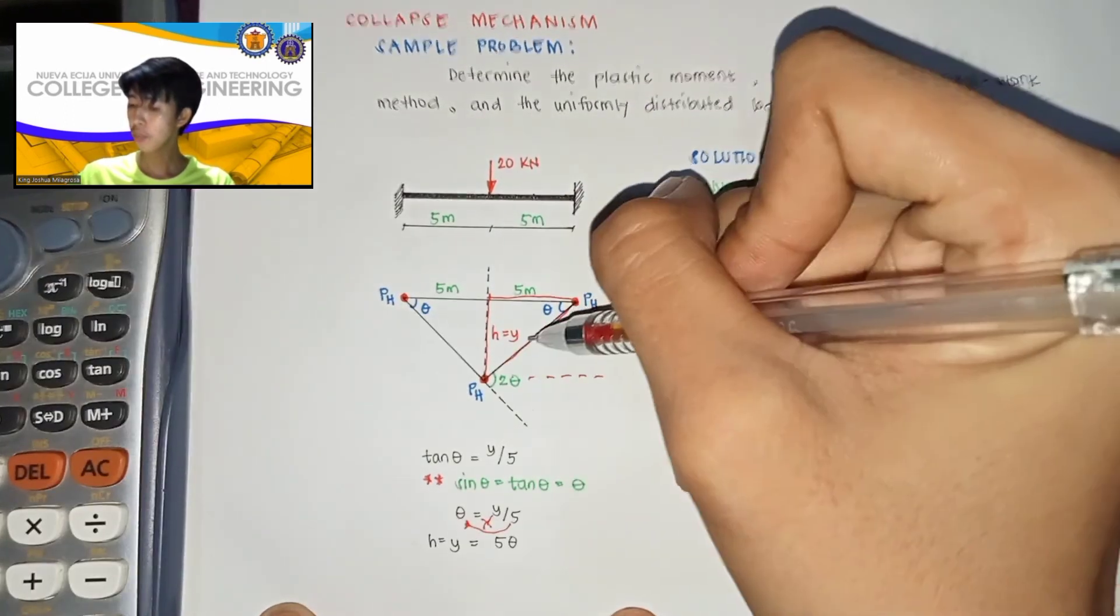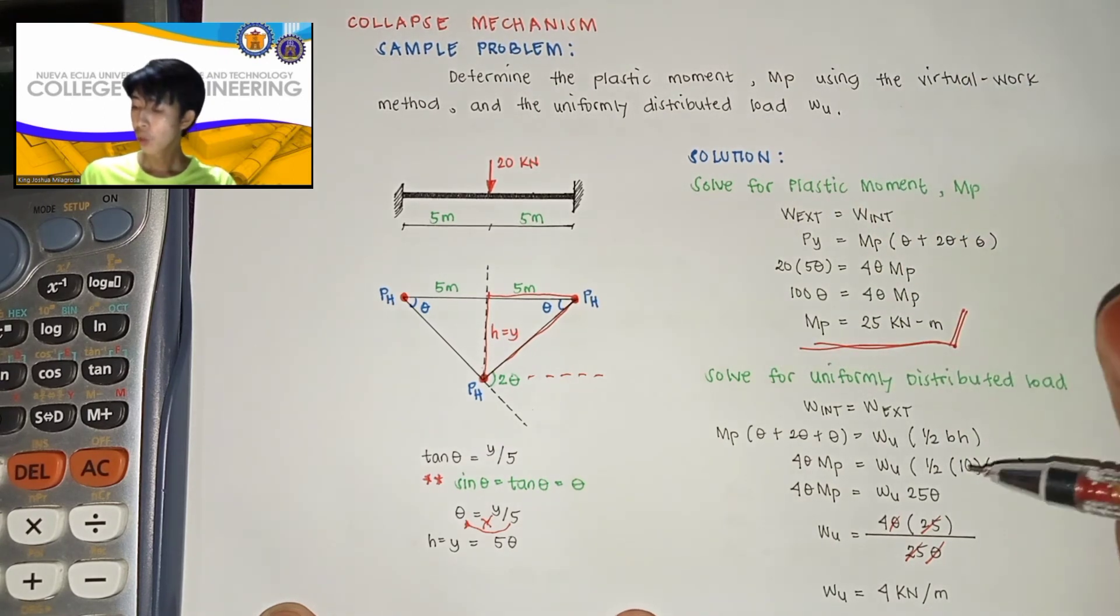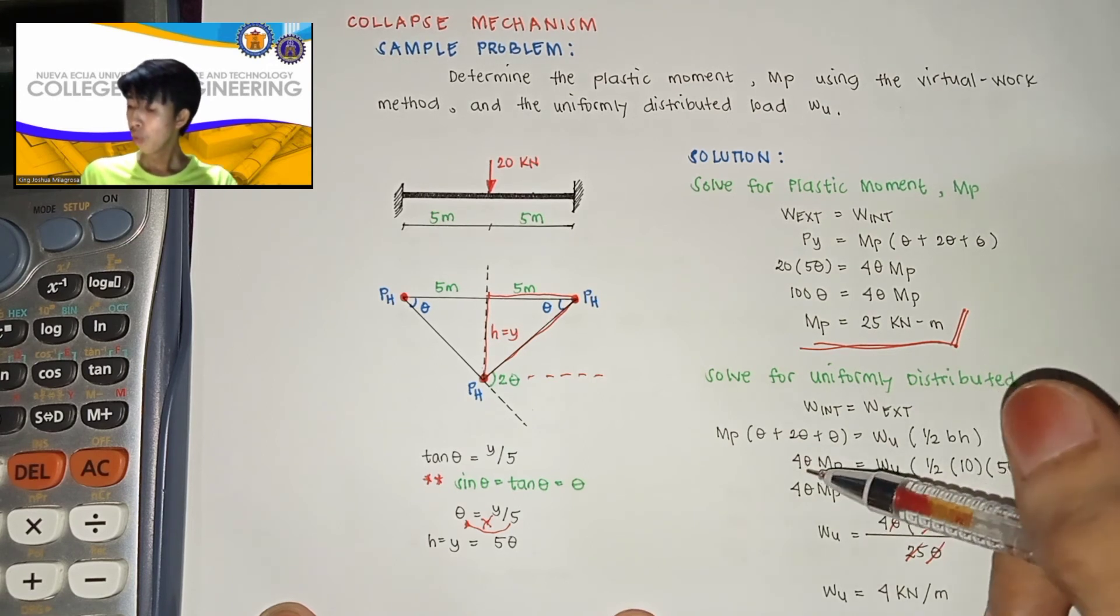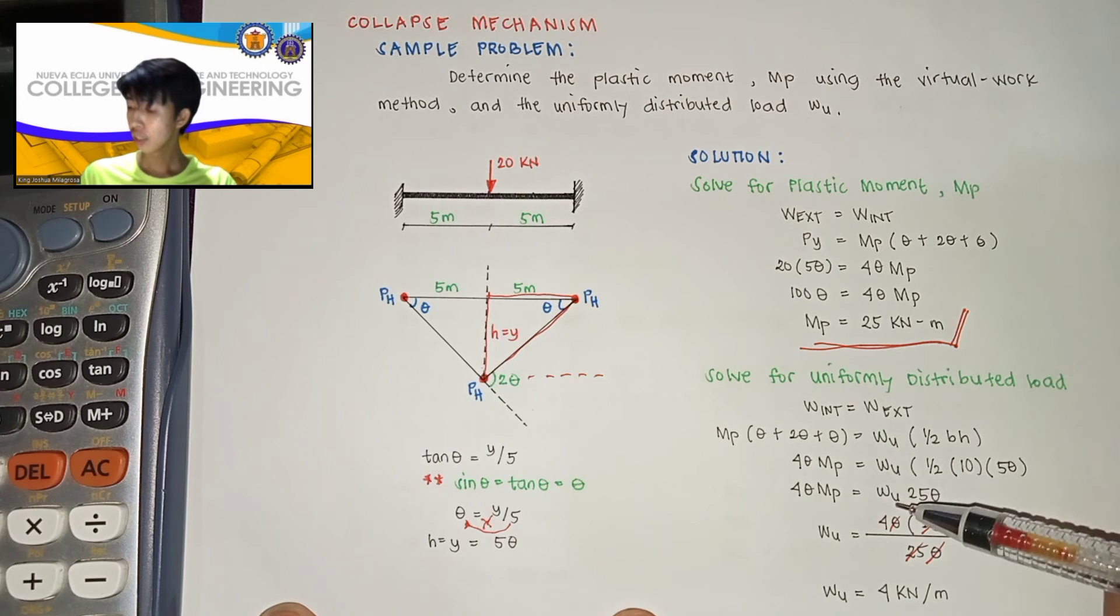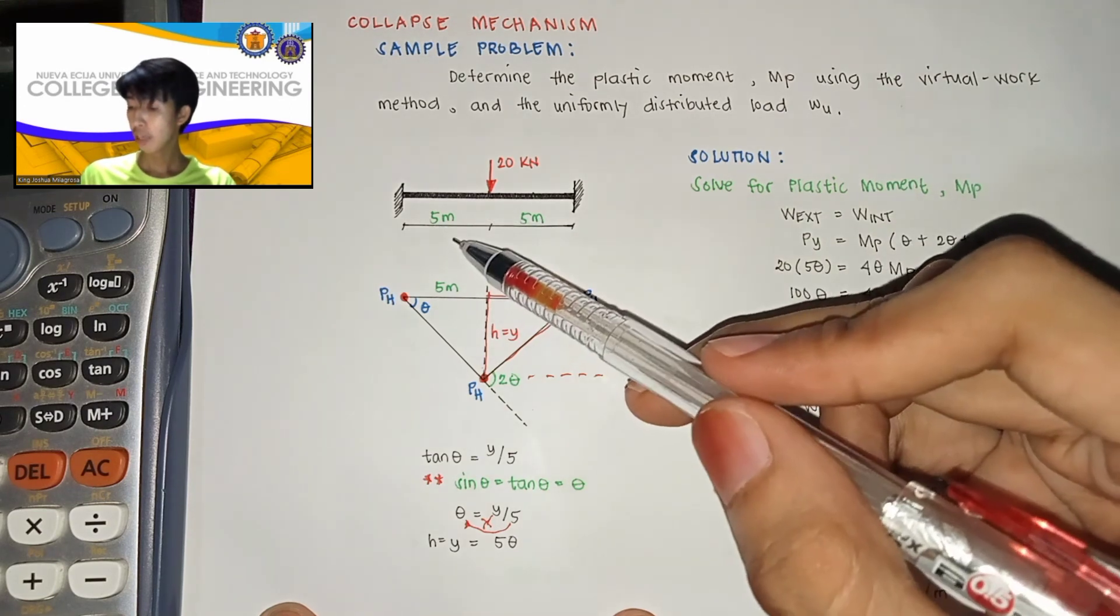i-multiply naman na natin siya sa area ng triangle na to. Alam natin that the area of a triangle is equal yan sa 1 half base times height. By substitution, 4 theta MP is equal yan sa wu multiplied by 1 half ng base, which is yung span ng beam,